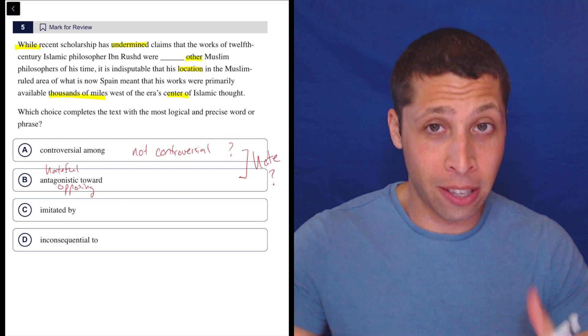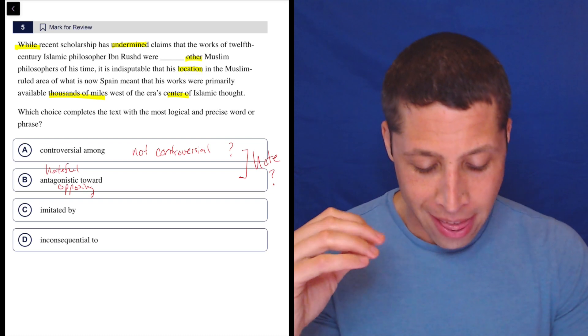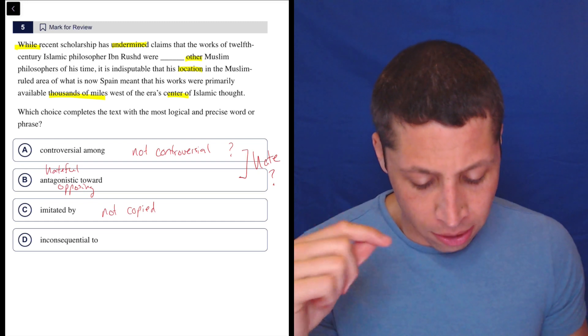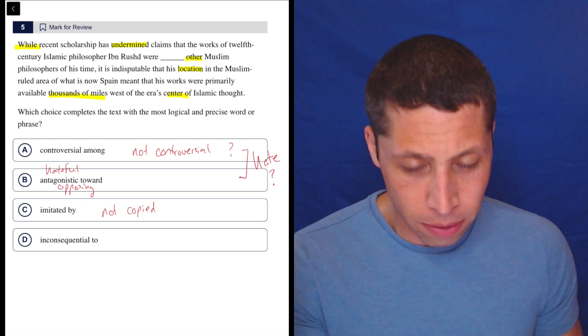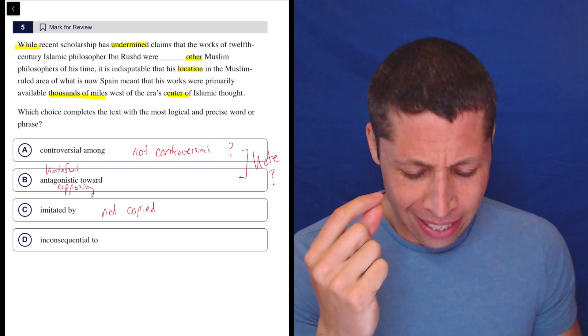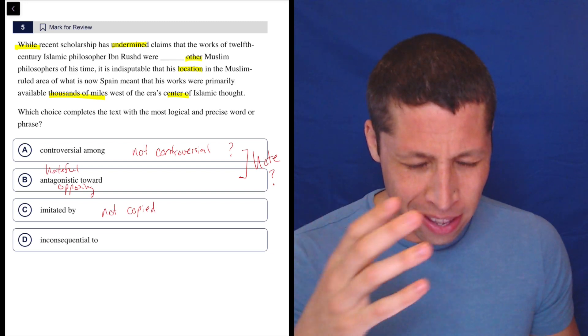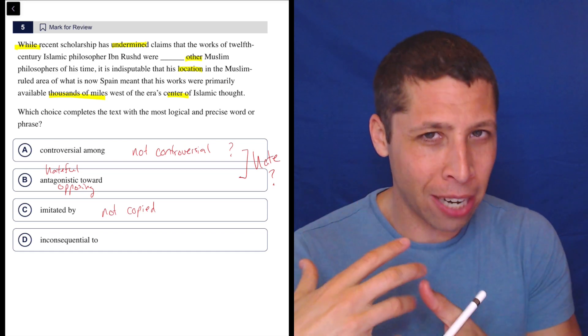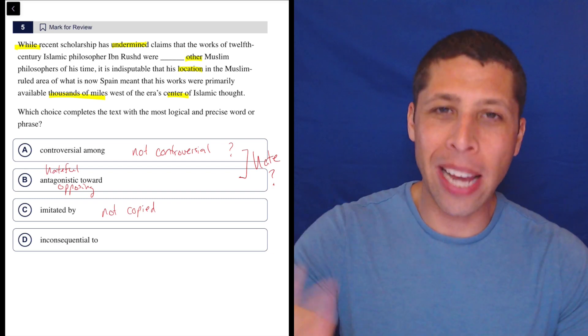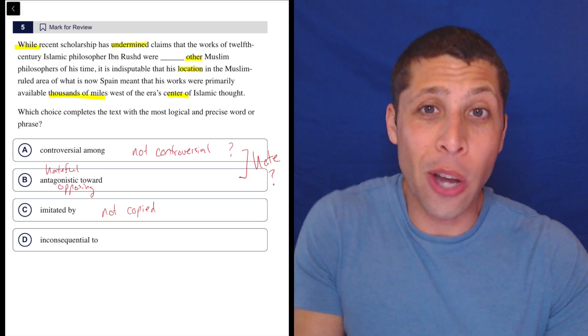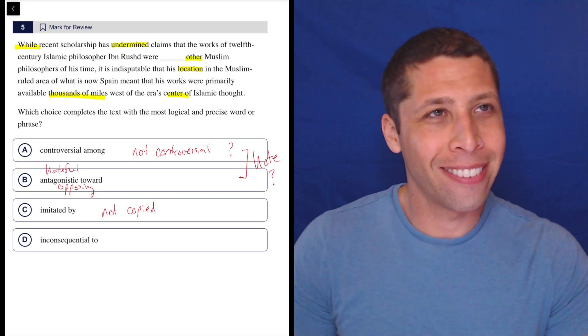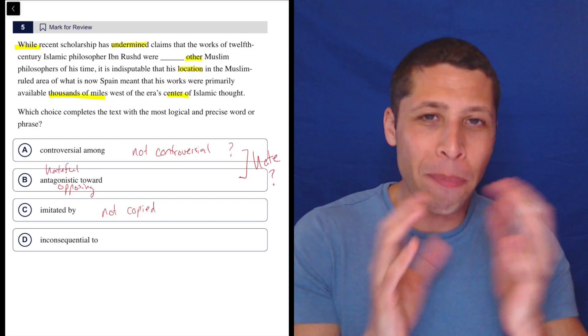So imitated obviously is going the other direction. This is now saying that they're copying him. So it's been undermined that this guy's works were imitated by other Muslim philosophers. So they're not copied by them. It is still though indisputable that he's far away. In my mind, what that would be saying is that it used to be believed that other people copied him, which would make sense if they lived in a normal area, but they're kind of saying at the end that they're far away from each other. So why would we think that they would copy him if they live far away? Like how would they even know that this guy exists? That seems to be the point of the end, right? Is that the location matters. And if he's thousands of miles away, then why would they be imitating him? How would they even know that he exists? So there's something weird about this. Let's look at D.